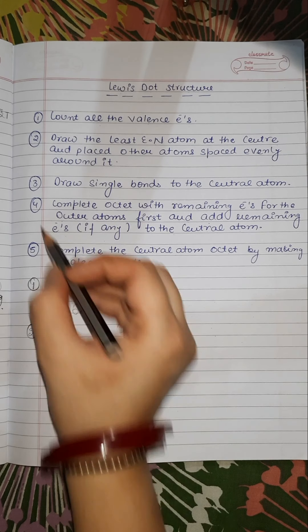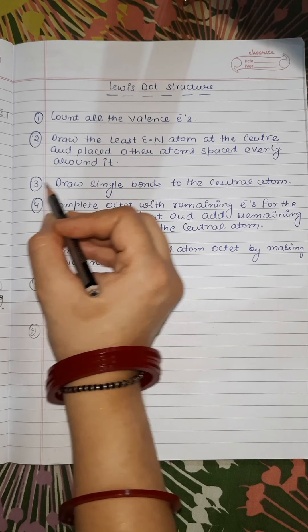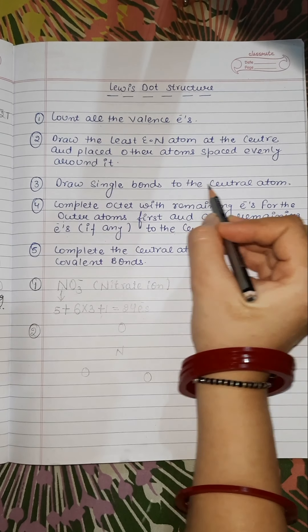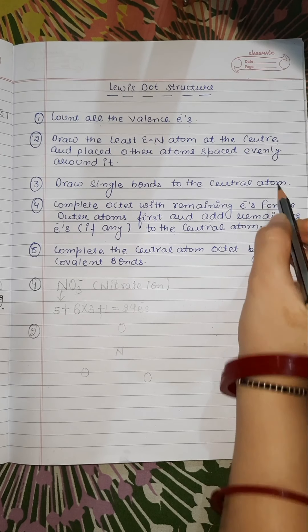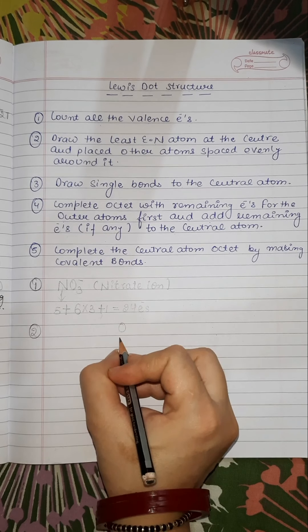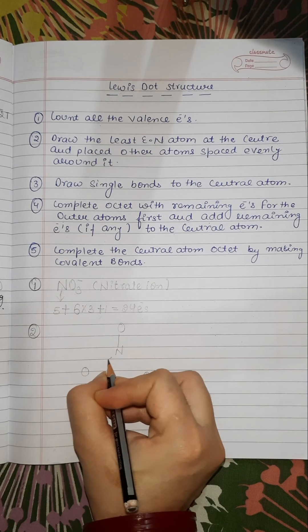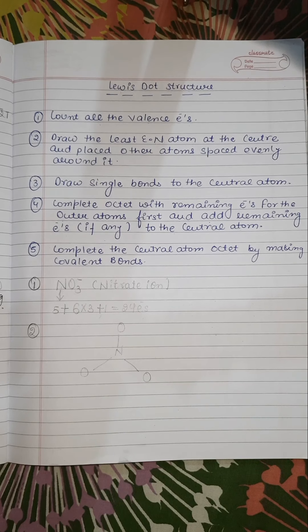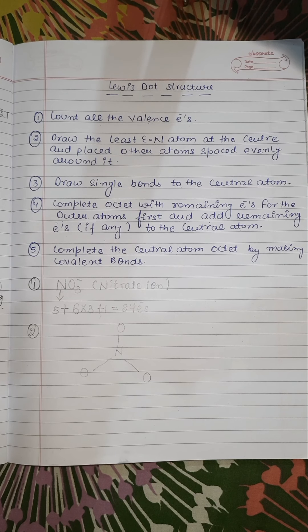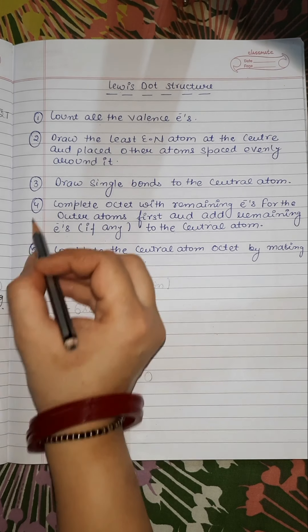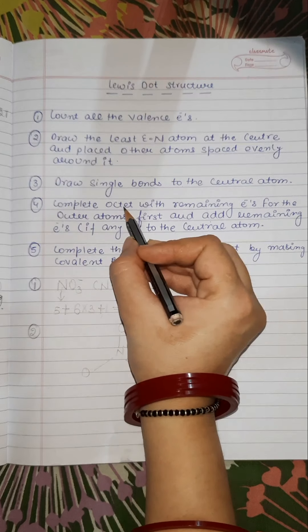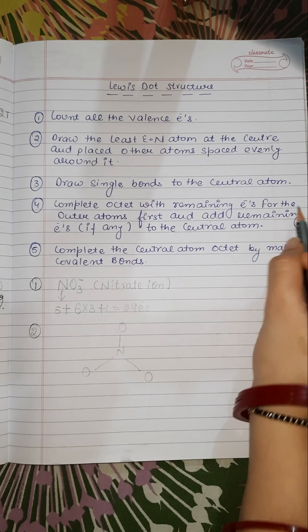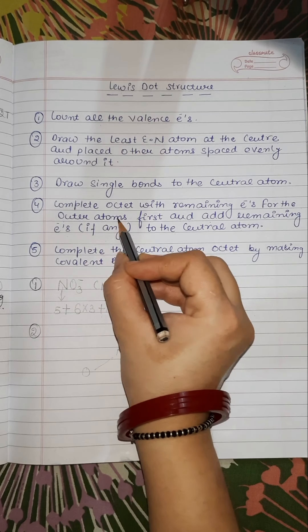Step 3: Draw single bonds from the central nitrogen atom to each of the surrounding oxygen atoms. Step 4: Complete the octet with remaining electrons for the outer atoms first.